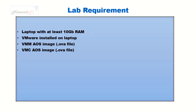Let's talk about the lab requirements. We would need a laptop with at least 10 GB of RAM with an operating system installed — in our lab, Windows 10. On this laptop we should have VMware installed, as well as the Aruba OS image for Virtual Mobility Master and Virtual Mobility Controller. We require a .ova file for both images, and we will install these OVA files on VMware.